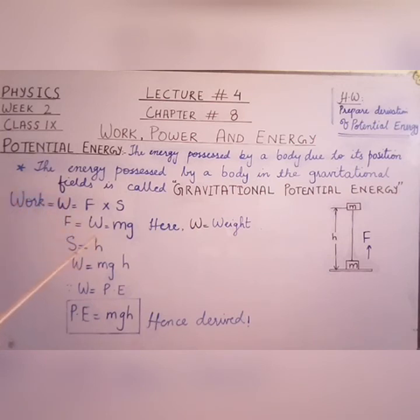When we replace F with W, that is with mg, it becomes W equals mgh. H, because the body is showing vertical motion, moving up and covering certain distance denoted by H. When the body is covering height, S is replaced by H. When we substitute the value of F and S in the equation of work, it becomes W equals mgh.